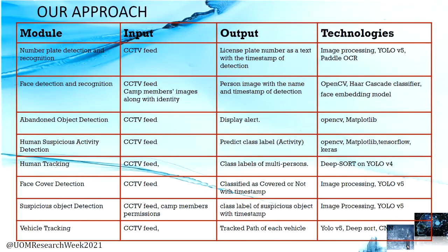For face detection and recognition, we have used OpenCV, Haar Cascade Classifier, and face embedding models. For abandoned object detection, we used OpenCV and Matplotlib. For human suspicious activity detection, we used OpenCV, Matplotlib, TensorFlow, and Keras. For human tracking, face cover detection, suspicious object detection, and vehicle tracking, we used YOLO version 5, YOLO version 4, DeepSort, image processing, and convolutional neural network technologies.